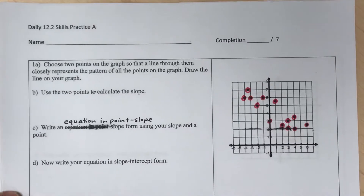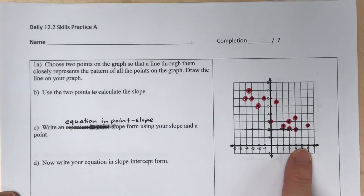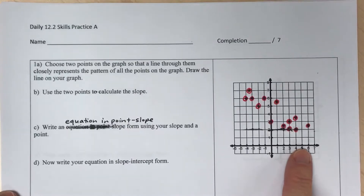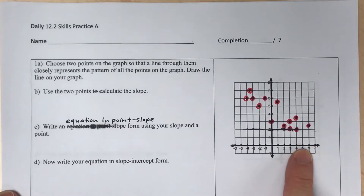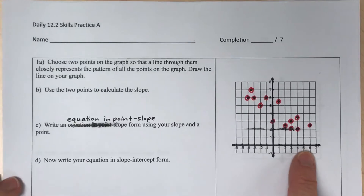Here is the second data unit on finding the line of best fit. If you need just a little bit more practice beyond the other videos we had, this might help you out. Feel free to print off the blank skills practice and follow along, then try it on your own and check with the posted key.